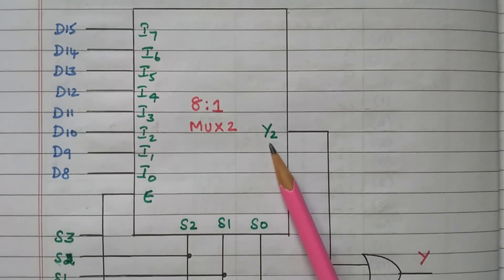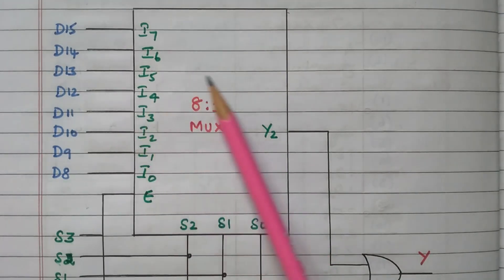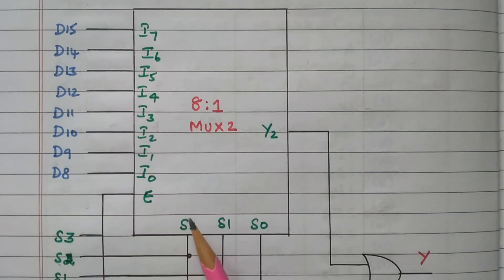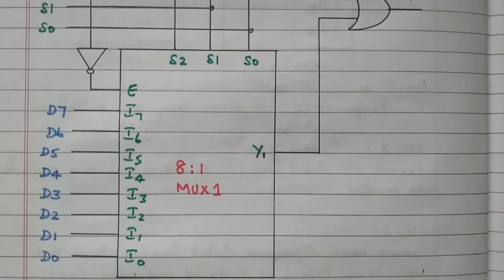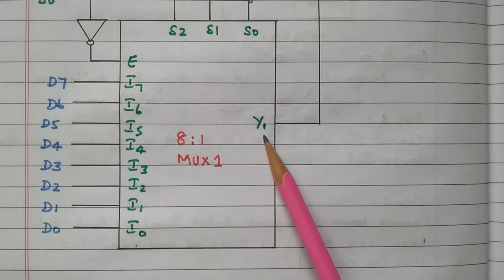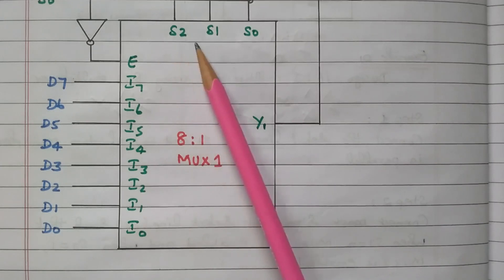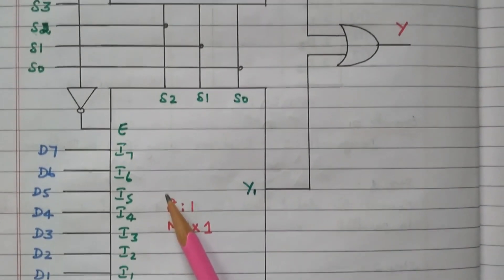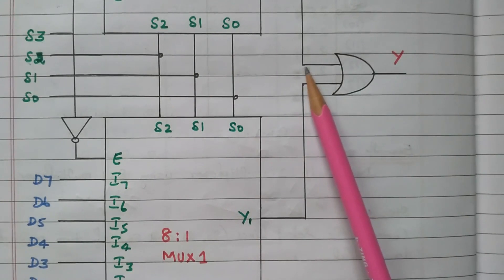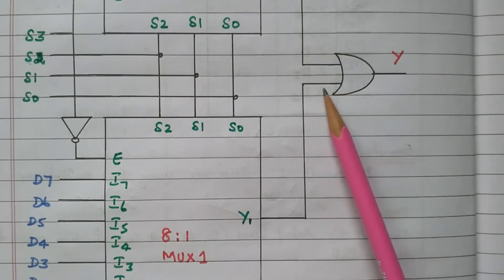The output of MUX2 is Y2. MUX1 is the first 8-to-1 multiplexer having the LSB data inputs from D0 to D7. Its output is Y1, and it also has an enable and selection lines S2, S1, S0 connected in parallel with MUX2. Both MUXes have S2, S1, S0 connected in parallel. The outputs Y1 and Y2 are both connected to an OR gate, which adds the outputs to produce the final output Y.